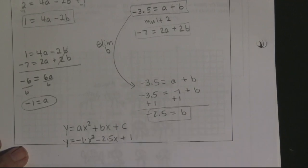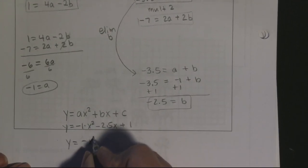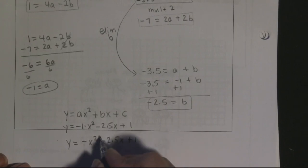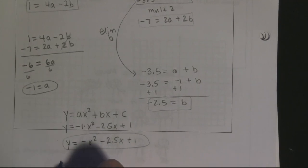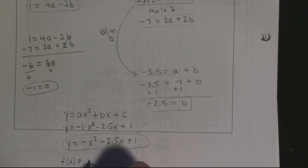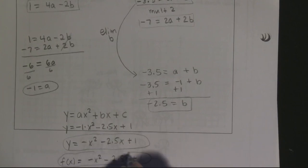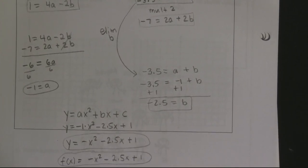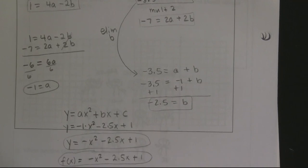The quadratic equation is y equals ax squared plus bx plus c. With a equals negative 1, b equals negative 2.5, and c equals 1, we get y equals negative x squared minus 2.5x plus 1. They called it a quadratic function so you could also write it as f(x) equals negative x squared minus 2.5x plus 1. Either notation is correct. That was number 12.